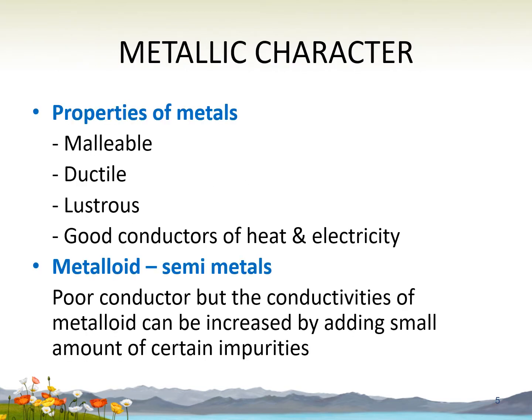Firstly, let's look at metallic character. There are four properties of metals. First, malleable — can be shaped without breaking or cracking. Second, ductile — able to be drawn out into thin wire. Number three is lustrous, which is similar to shining. And last, good conductors of heat and electricity.